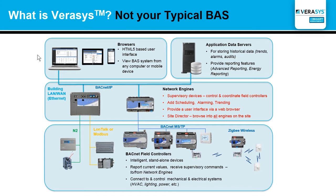Varisys is not your typical BAS system. Your typical BAS system may have some application data servers storing historical trends off to a server somewhere. That server can be accessed through browsers or other interfaces on that site, or you may directly go to the engines if you didn't have the server to get your data. In the BACnet world there are devices called supervisory devices — supervisory controllers — that essentially keep track of all the data on the bus and organize it so that you can view it.